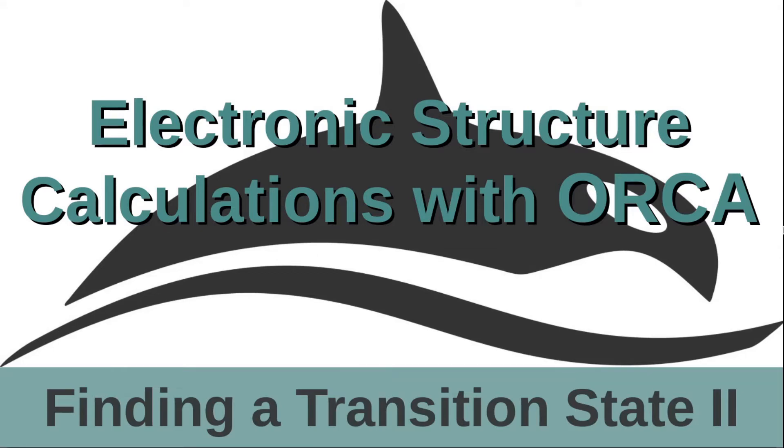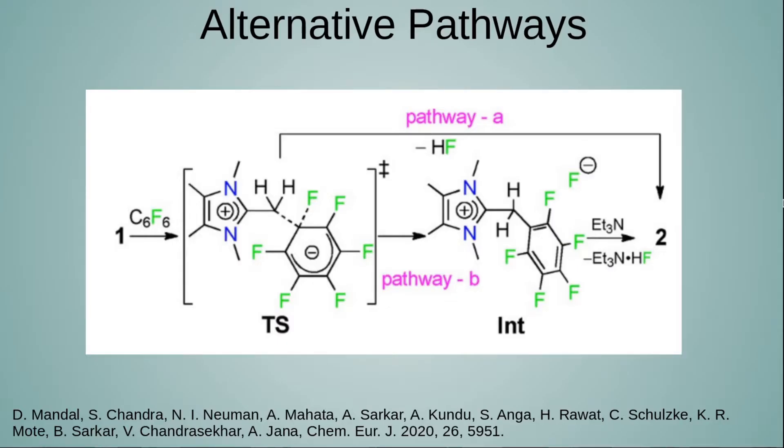Hi, welcome back. Today I'm going to talk more about finding transition states and the importance of solvation and exploring different pathways. This work dealt with n-heterocyclic olefins producing an aromatic nucleophilic substitution reaction on hexafluorobenzene. It was found that there were many pathways.